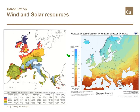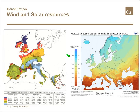Spain's solar resource in terms of direct normal irradiation — the resource required for solar concentration technologies — makes it practically the only European country, together with Portugal, with significant resources in this regard. It is still somewhat below the values reached in the so-called solar belt of the world, where direct normal irradiation is maximum, including northern Africa, the Middle East, and northern Chile.